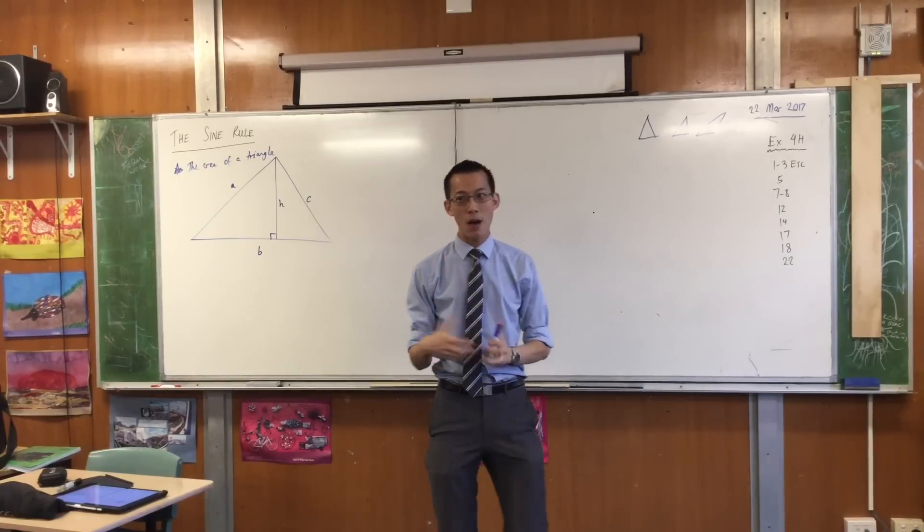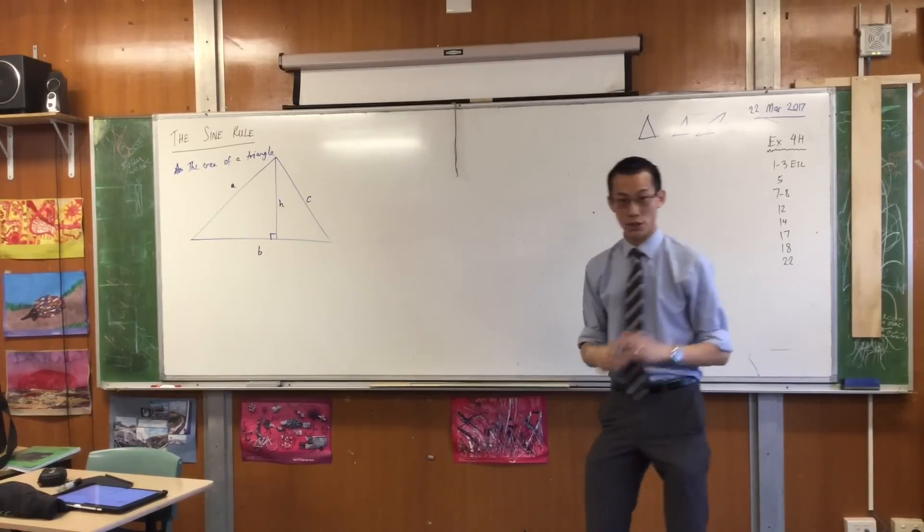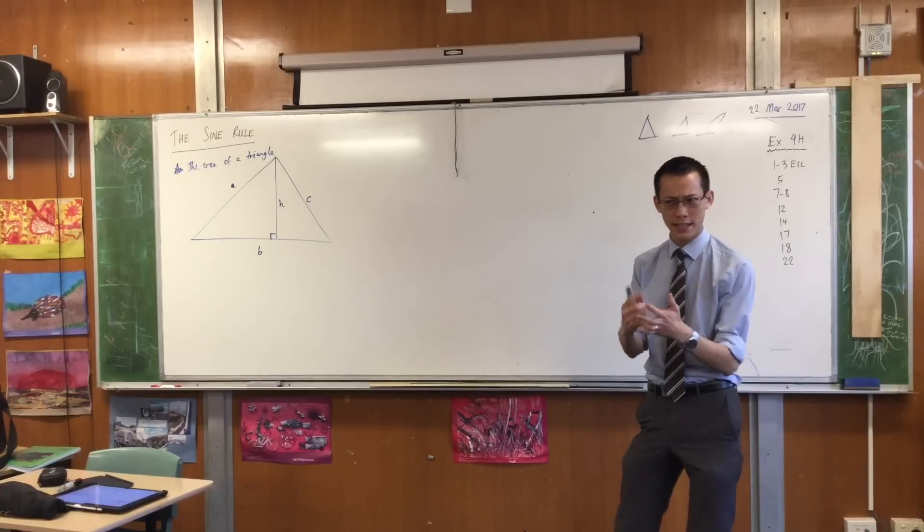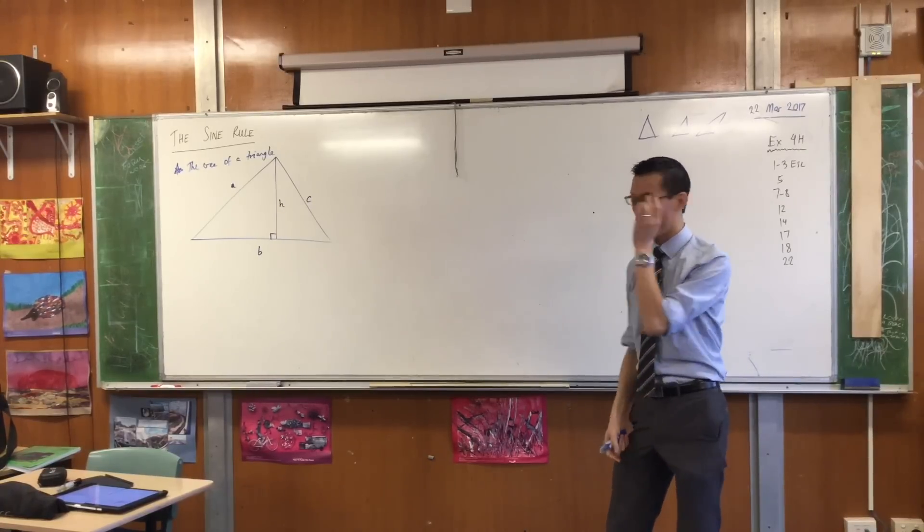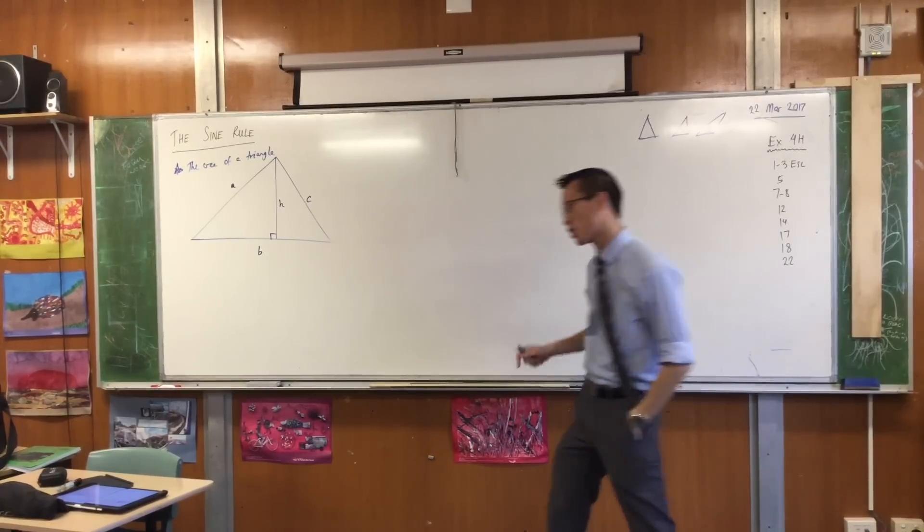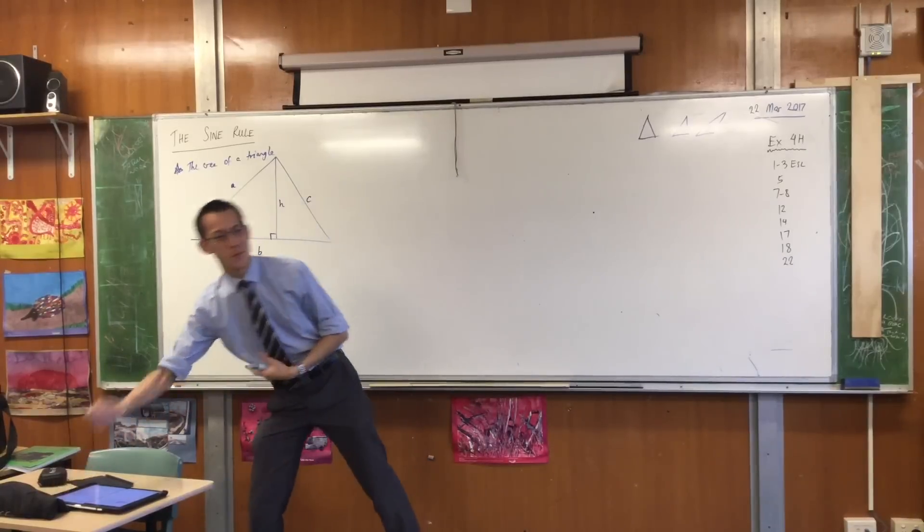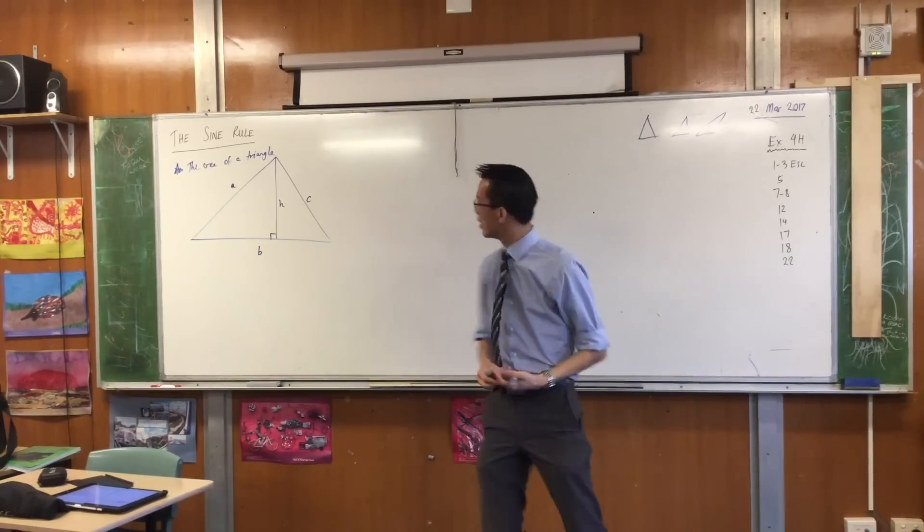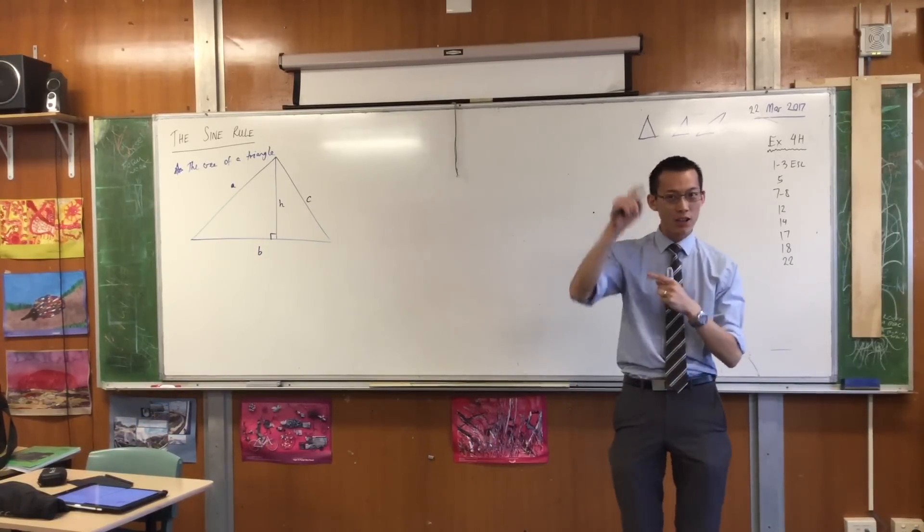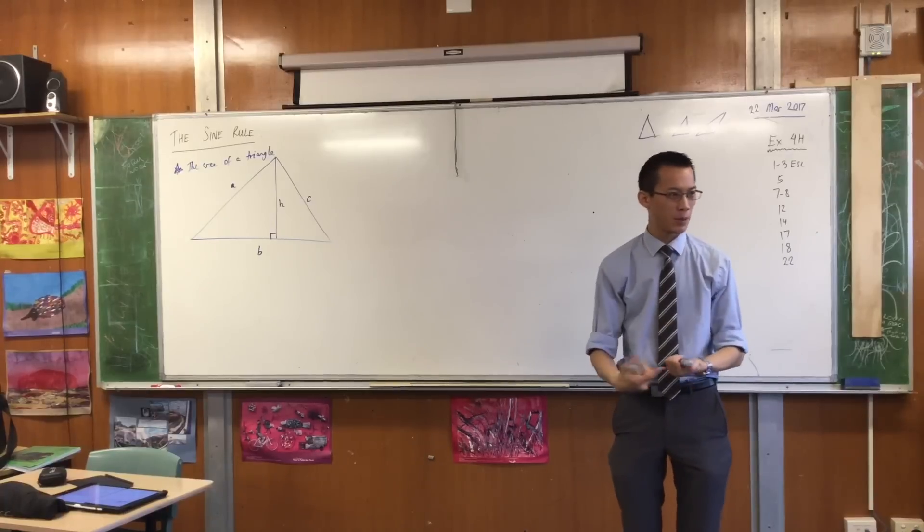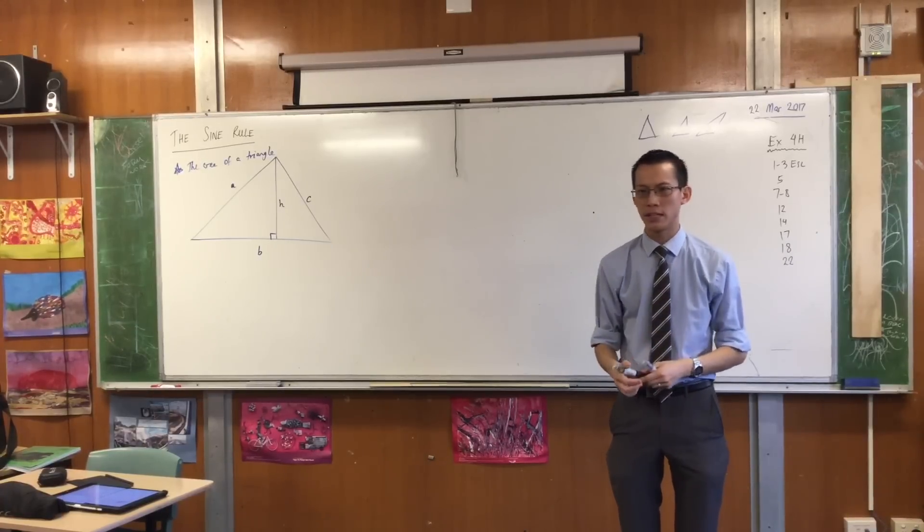Now, I want to develop the area formula that you've seen before, which is more sophisticated than half base times height, which uses trig. So to do that, I need some angles on here. Being that I have labeled my sides A, B and C, I'm going to name my angles capital A, capital B, capital C. But how do I do it? I do it in a particular way, not just randomly.